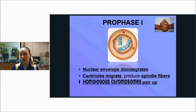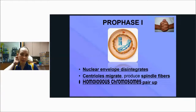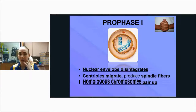The key difference in prophase one of meiosis is that homologous chromosomes pair up — that does not happen in mitosis. In mitosis, chromosomes are just in a single file row, but here they pair up with each other.